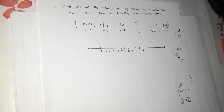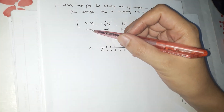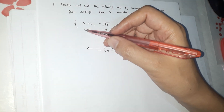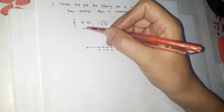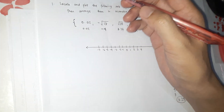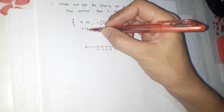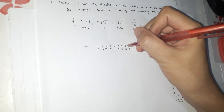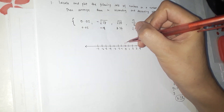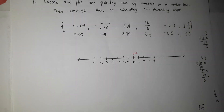We're going to estimate where to place each number. For 0.02 — it means after 0, and since it's 0.02, it's very close to 0. So we plot 0.02 just slightly to the right of 0.